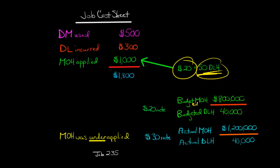If actual is higher than the amount that was applied, that means we didn't apply enough manufacturing overhead. Because our rate, based on the actual, if we take $1.2 million divided by 40,000, it's $30 per direct labor hour.